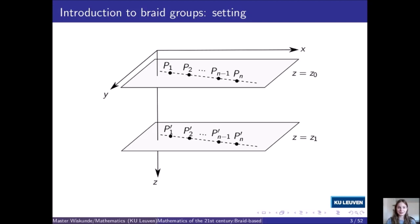Let's start with the introduction to braid groups. You will see that braid groups are really intuitive and that they are literally just groups of braids, but of course we have to make this specific. First, I will show you the setting that we will be working in to define a geometric braid on n-strings. We will work in the three-dimensional Euclidean space R³. In this space we have a coordinate system x, y, z, with the z-axis pointing downwards. Now we choose two parallel horizontal planes, called the upper plane and the lower plane, and then we choose n points on a line in the upper plane and project them orthogonally onto the lower plane.